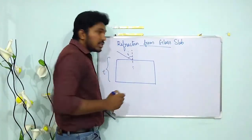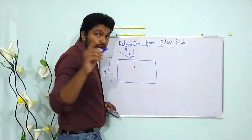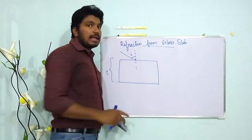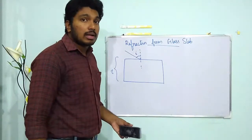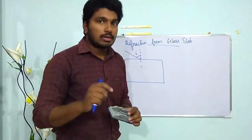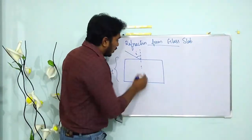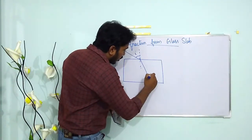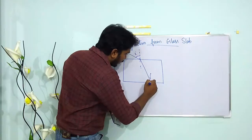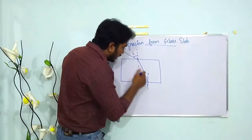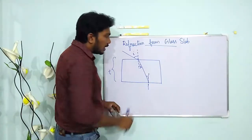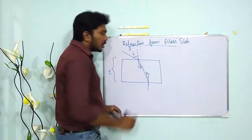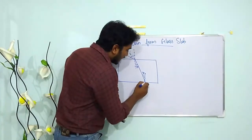The angle of incidence is i. Light is moving from a rarer medium to a denser medium, so it bends towards the normal. I am drawing it like this. At the second surface, I draw the normal again. This angle of refraction is r. Since the two surfaces are parallel, the angle of incidence at the second surface is also r — alternate opposite angles.